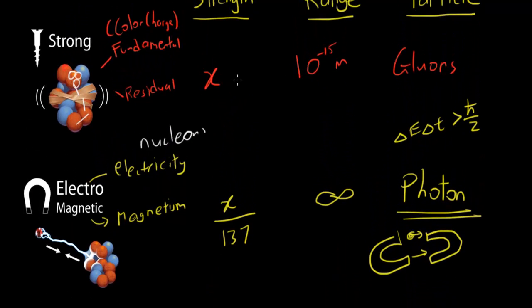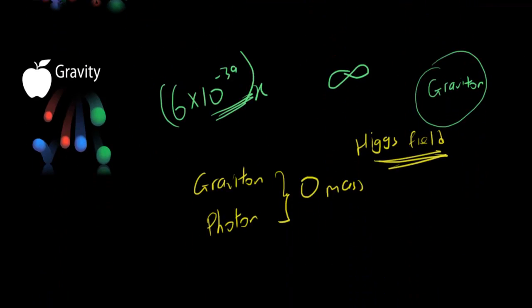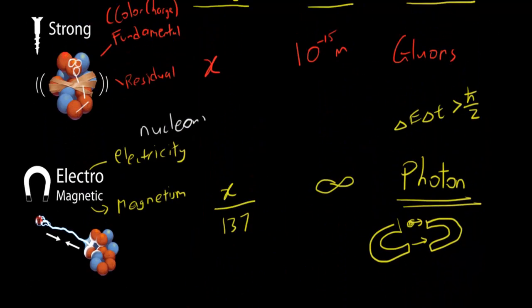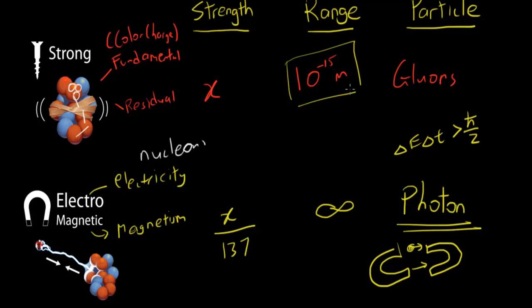The exception is the gluons. Gluons actually have zero mass, so you would think that just like the photon and graviton, they should travel at the speed of light and have infinite range. But gluons don't — they only have a limited range. That's because gluons actually interact with themselves. Before they can travel a large distance, they interact with themselves, and that limits their range.